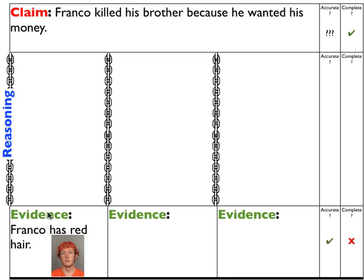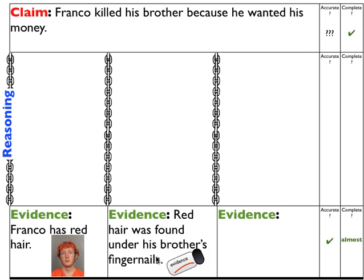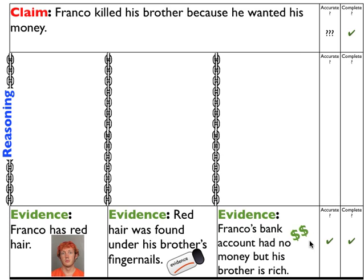Let's start with some evidence. We walked into the crime scene and saw Franco has red hair. Is that accurate? Looks like it from the picture. But it's not complete enough to convict Franco. So we need more evidence. Red hair was found under the brother's fingernails — not looking good for Franco. Still accurate, but not yet complete. We claimed Franco wanted his money, and we have no evidence to back that up. So let's add: Franco's bank account had no money, but his brother was rich. Now it's accurate and complete — we have evidence to support all parts of our claim.